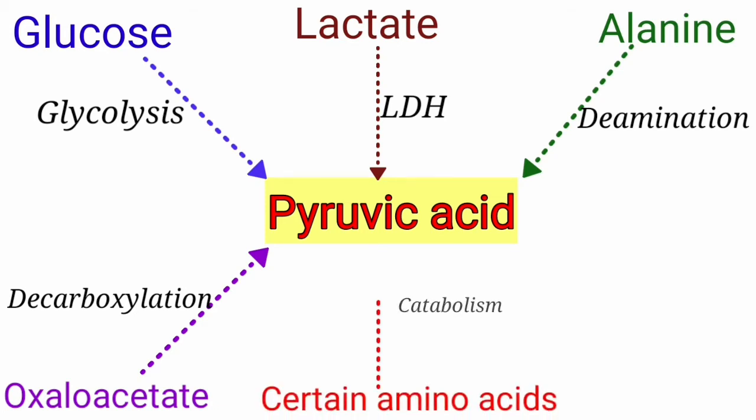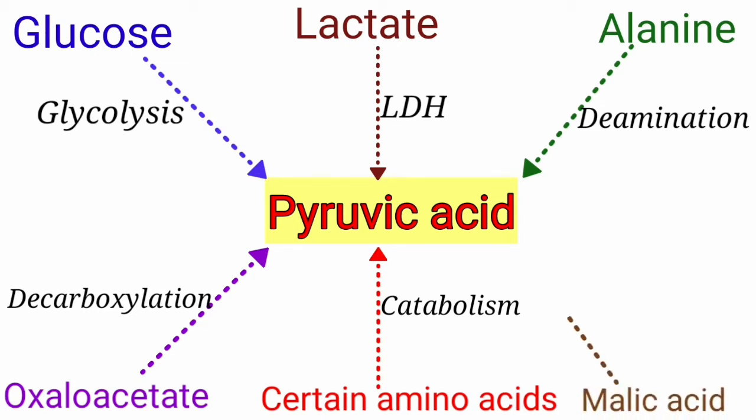The catabolism of certain amino acids like glycine, serine, cysteine, and threonine also forms pyruvic acid. It is also formed from malic acid by the action of the enzyme malic enzyme. This particular reaction requires NADP as the coenzyme.